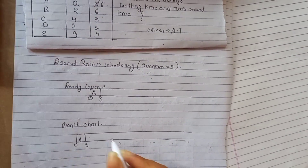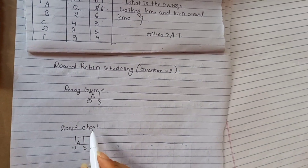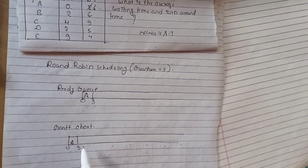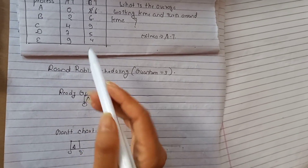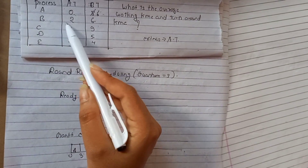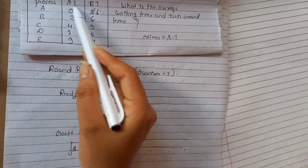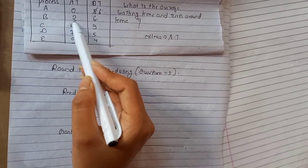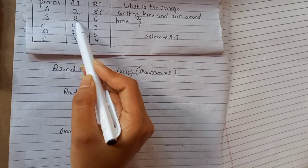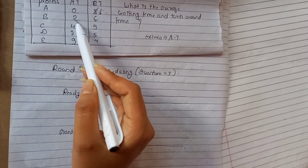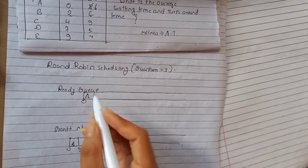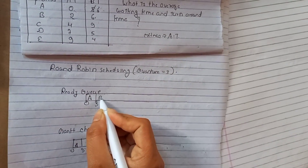Process A gets 3 units, then process A again if needed. Processes B, U-3 are in the ready queue.